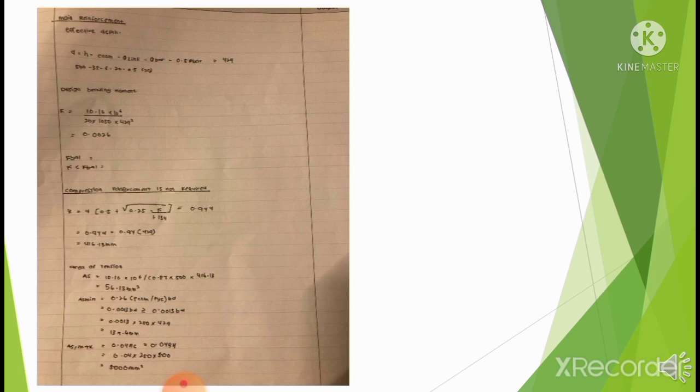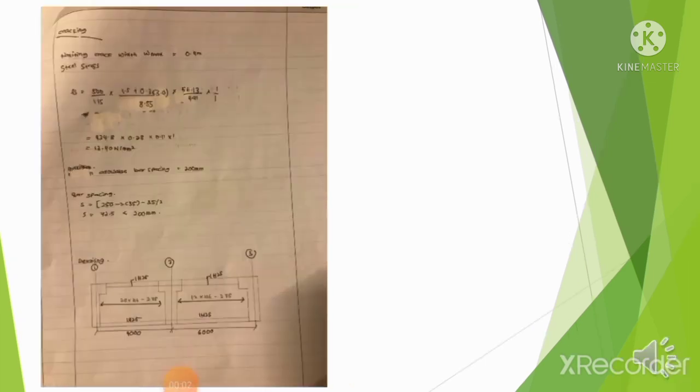To find AS min = 0.26, using the formula FCTM divided by FYK and BD, giving 139.4 mm. For crack spacing: FS = 500 ÷ 1.15 × 1.5 + 0.3 × 3.0 ÷ 8.55, then multiplied by 56.13 ÷ 491 × 1 ÷ 1. The answer is 13.40 N per mm².